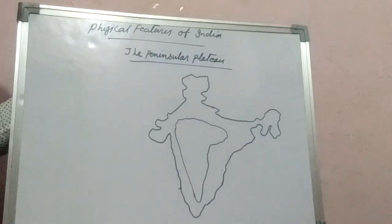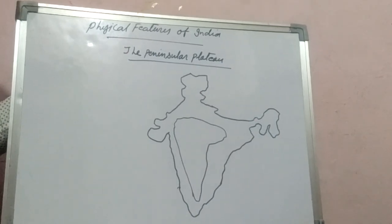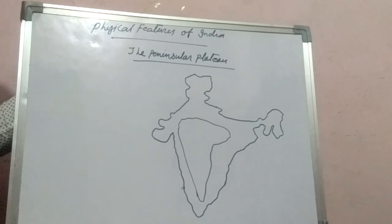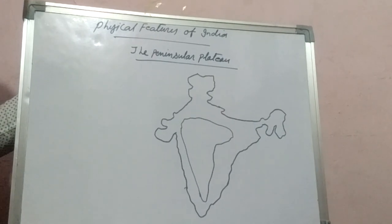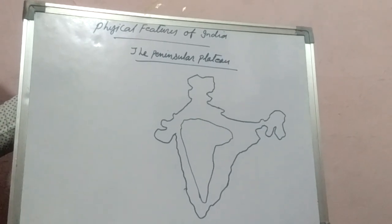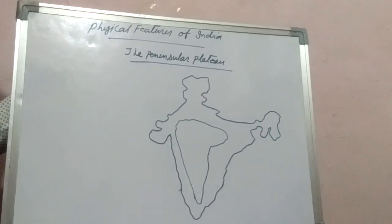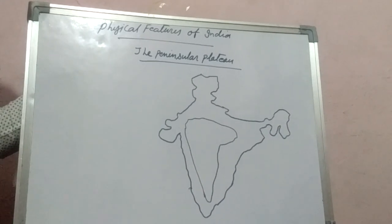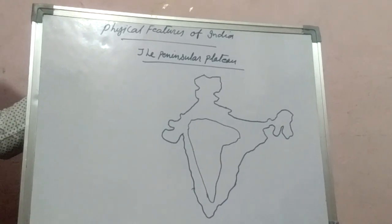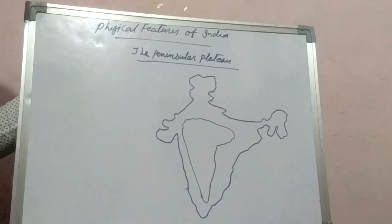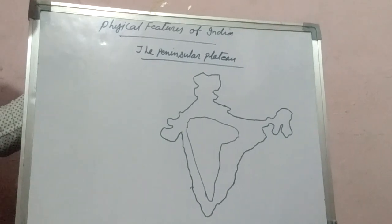It was termed from the word 'Dakshan.' Later, it was known as Deccan. Many of the historians started to term it as Deccan in place of Dakshan. So the topic is Peninsular Plateau.